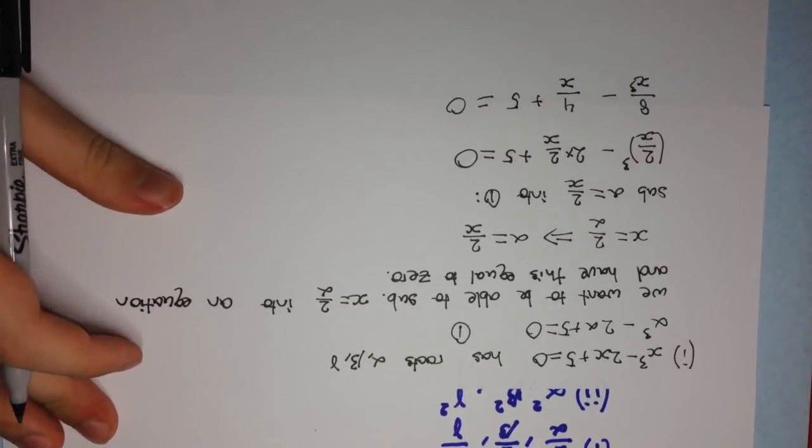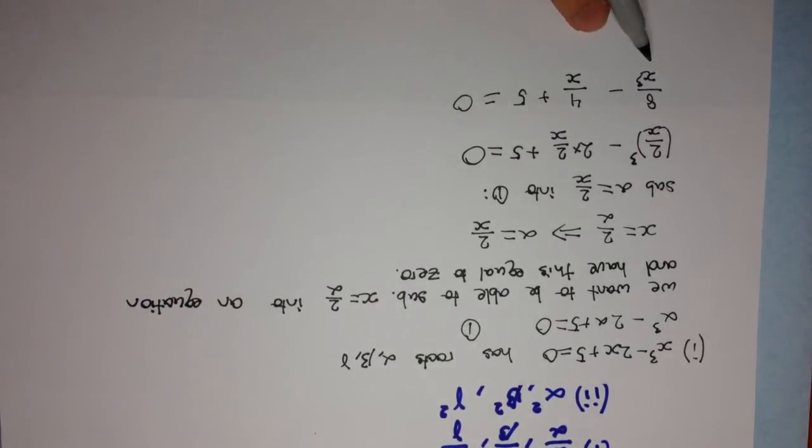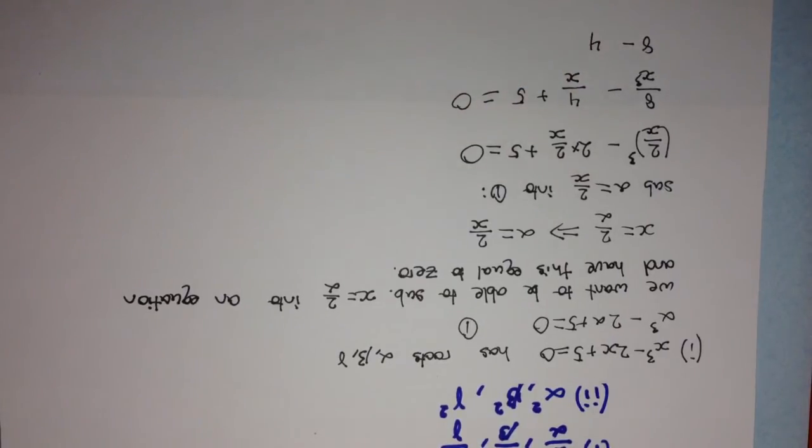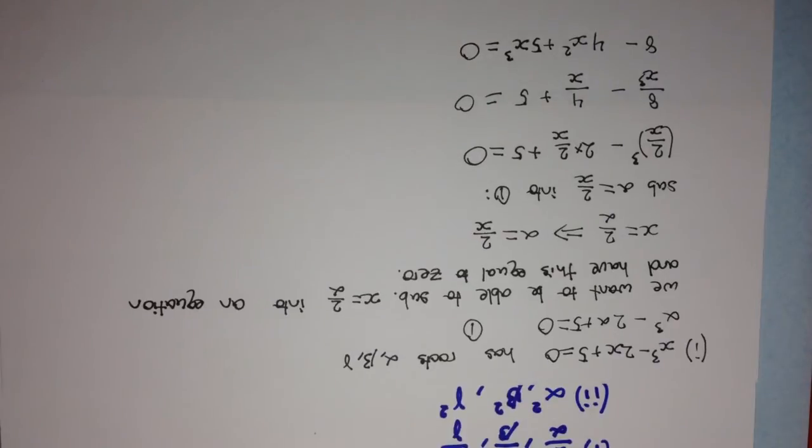Now, this isn't exactly a polynomial, because remember, a polynomial can only have positive integer coefficients for x. So if we multiply through by x cubed, we'll get 8 minus 4 x cubed over x will be x squared, plus 5x cubed, is equal to 0. And so therefore, 5x cubed, minus 4x squared, plus 8, equals 0, has roots 2 over alpha, 2 over beta, and 2 over gamma.